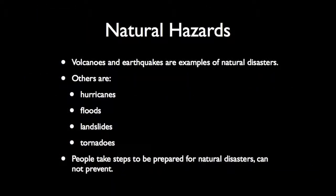Volcanoes and earthquakes are examples of natural disasters, also called natural hazards. Other natural hazards include hurricanes, tornadoes, landslides, and floods. These events threaten lives and property. But people can take steps to prepare for natural disasters so that damage will not be as severe. For example, architects can design buildings that will not collapse when the ground shakes. Local governments can set routes for people to leave affected areas during a hurricane. Citizens can practice what to do during an earthquake and keep emergency supplies at home.